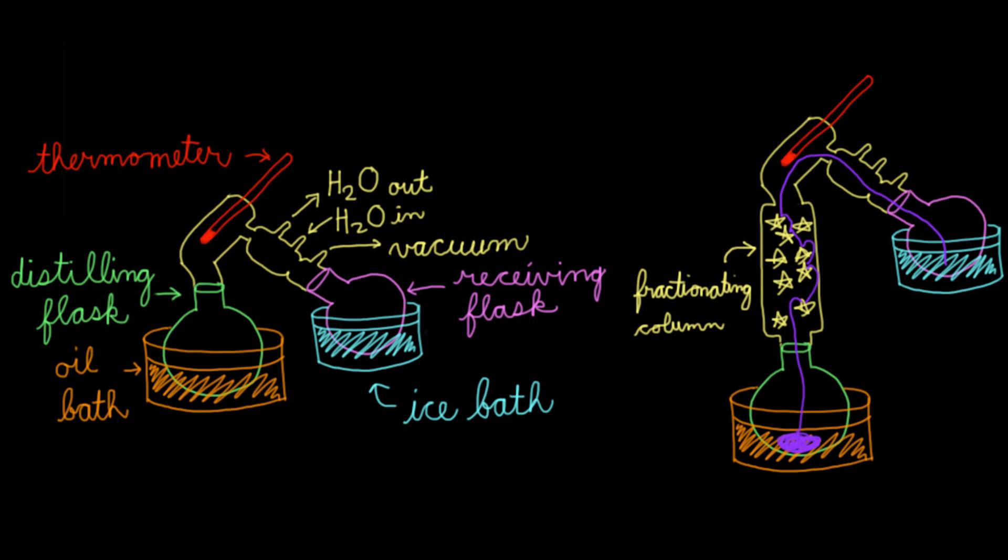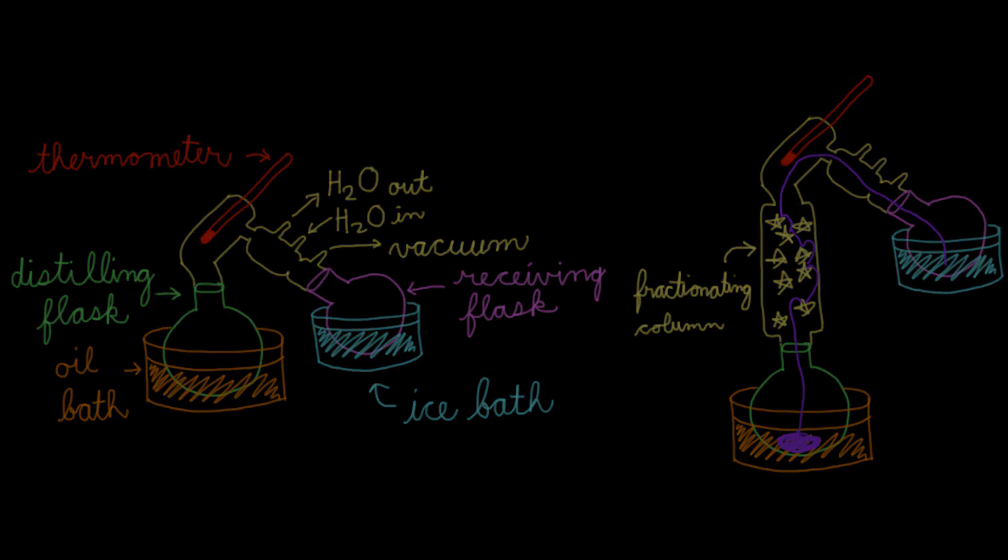So let's summarize what we've talked about today. We talked about how you would set up a simple distillation and how that's great for separating out compounds with pretty big boiling point differences, say, a difference bigger than 25 to 30 degrees Celsius. And fractional distillation, which is great for separating out compounds with smaller differences in boiling point. So let's get started.